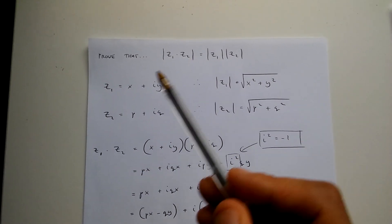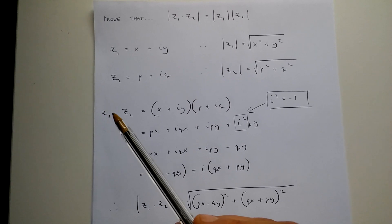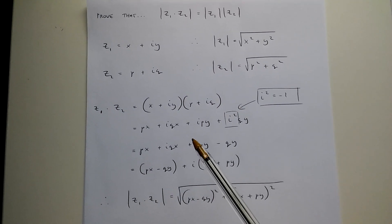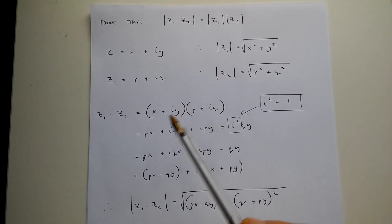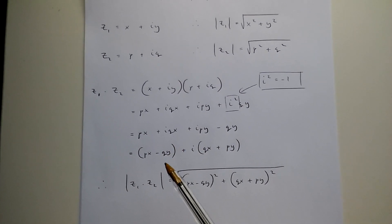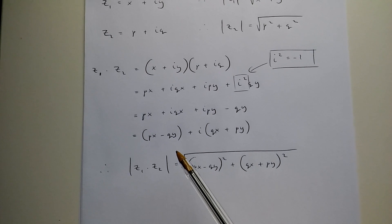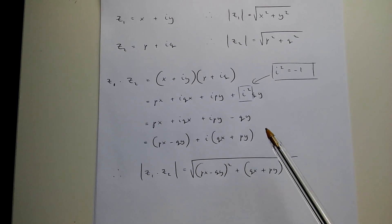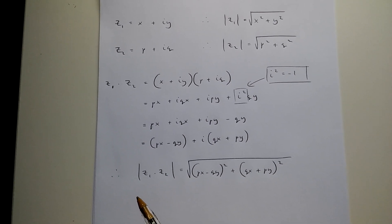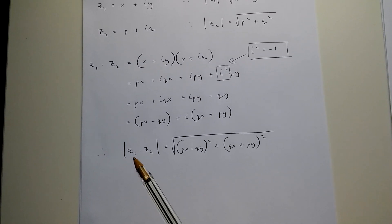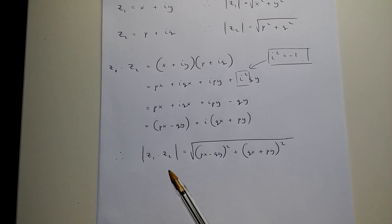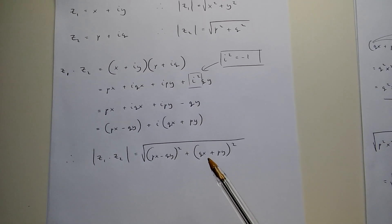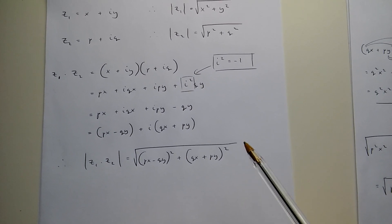Now from these rules over here, z1 times z2 is x plus iy times p plus iq. If I multiply everything out, what I end up with is px minus qy plus i times qx plus py, which is another complex number. This means that the modulus of z1 times z2 is equal to the square root of px minus qy squared plus qx plus py squared.